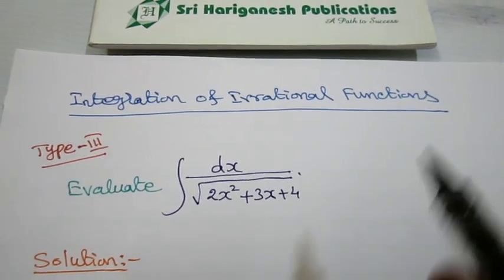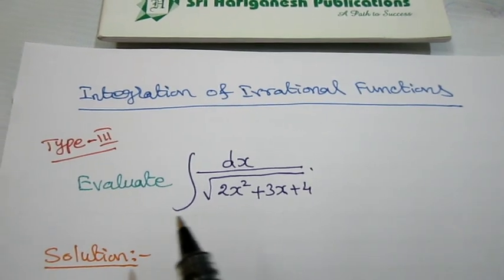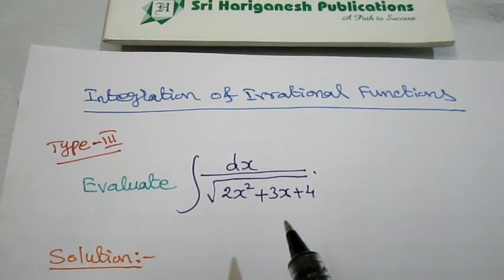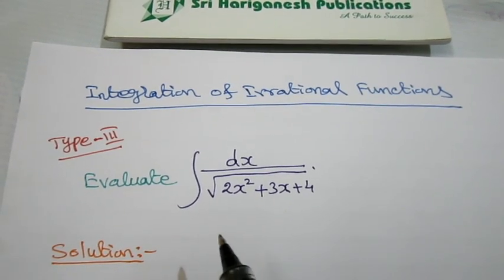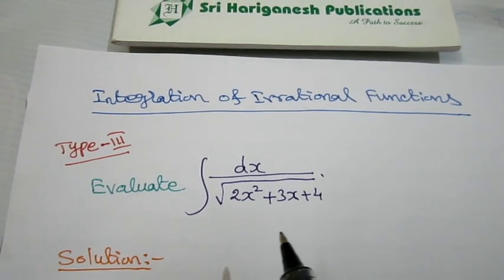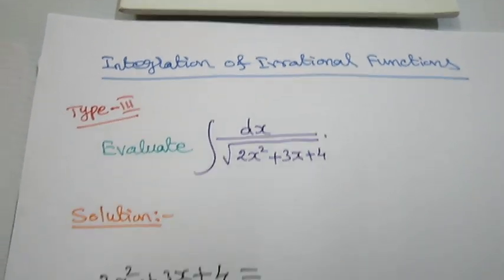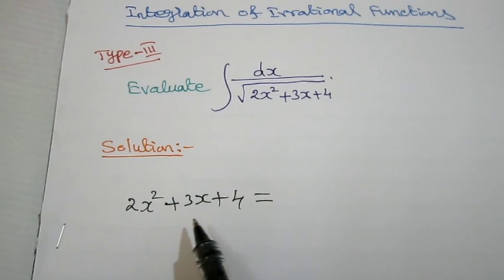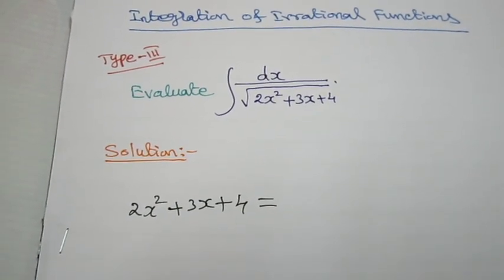Integration of irrational functions, Type 3. Evaluate the integral dx by root of 2x squared plus 3x plus 4. In Type 3, the quadratic equation has to be converted into perfect square form.